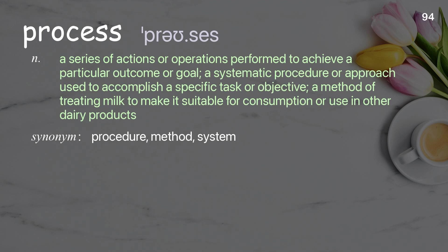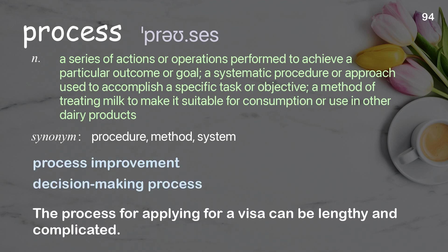Process — a series of actions or operations performed to achieve a particular outcome or goal; a systematic procedure or approach used to accomplish a specific task or objective. Examples: process improvement, decision-making process. The process for applying for a visa can be lengthy and complicated.